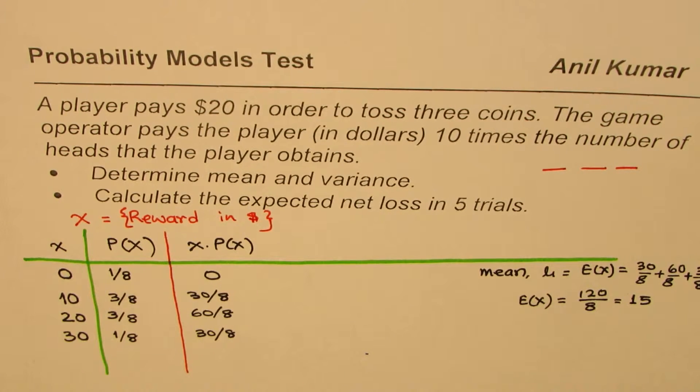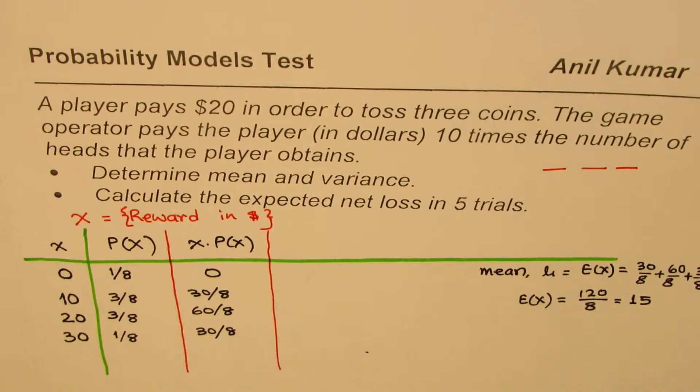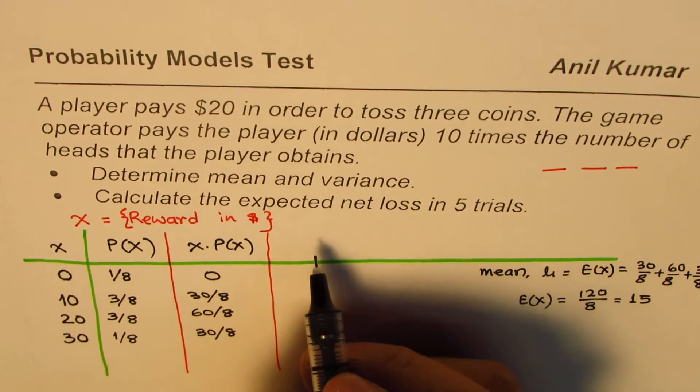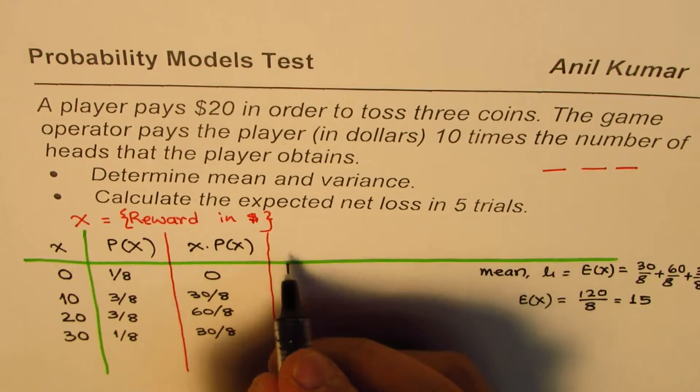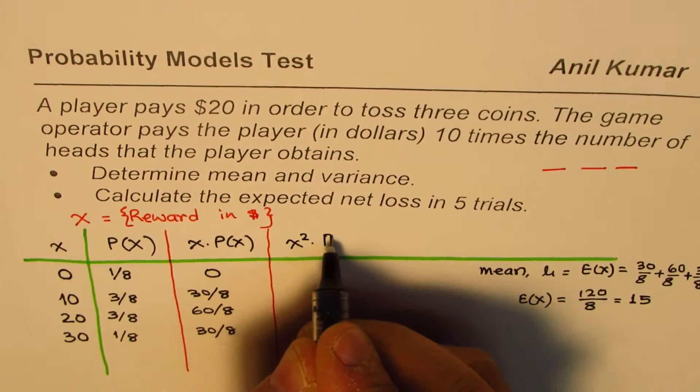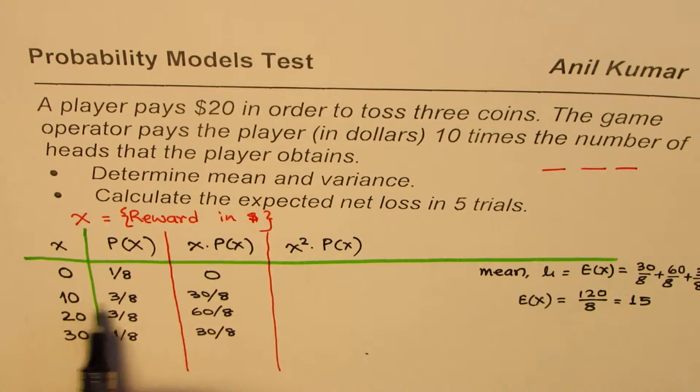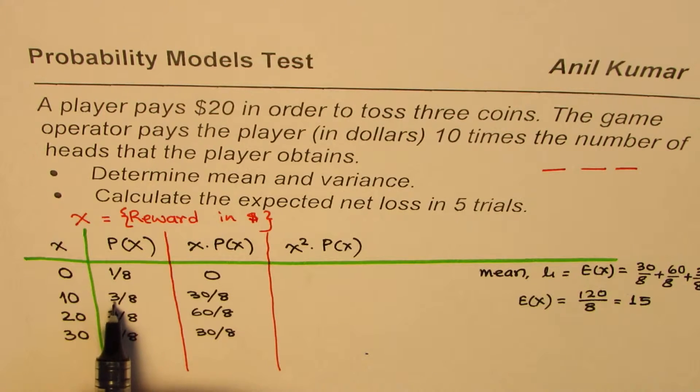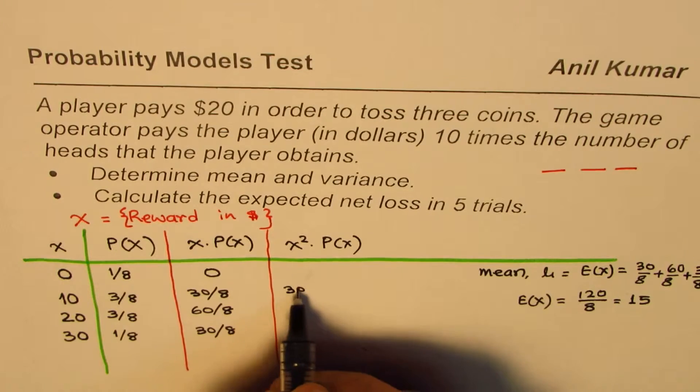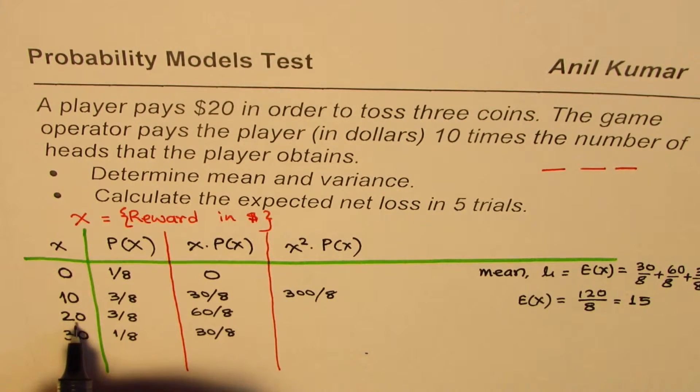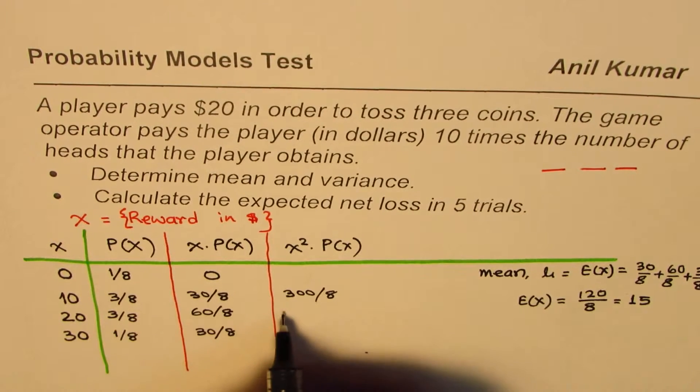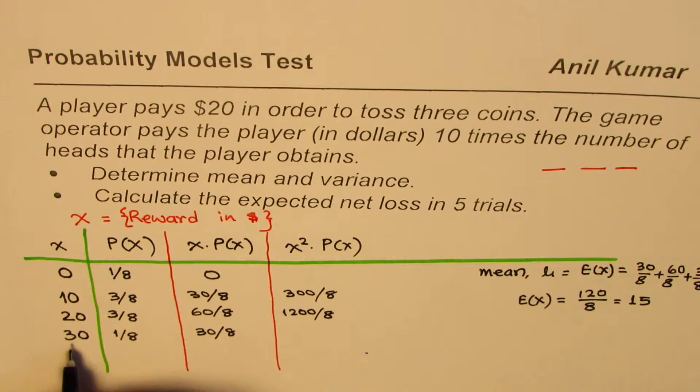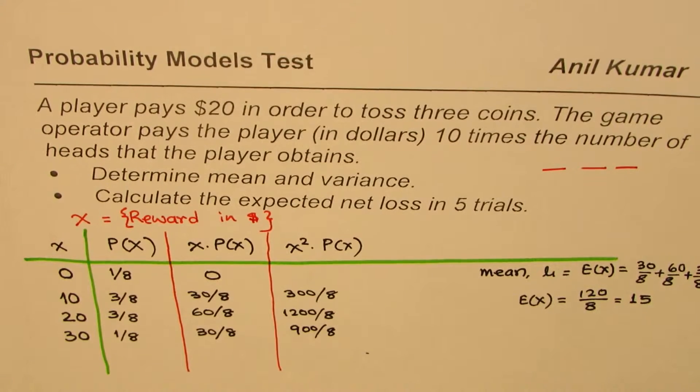Now let's look into variance. How do you find variance? So for variance, we need to find sum of x square times p of x. So we need to find x square times p of x. So this will be, we have to multiply these two x square. So x square times p of x. So we get 300 over 8. Square of 20 is 400. So 400 times 3 gives you 1200, so it is 1200 over 8. Square of 30 is 900. And 900 into 1 will give us 900 and divide by 8. So it is 900 over 8. So that is how we get this.